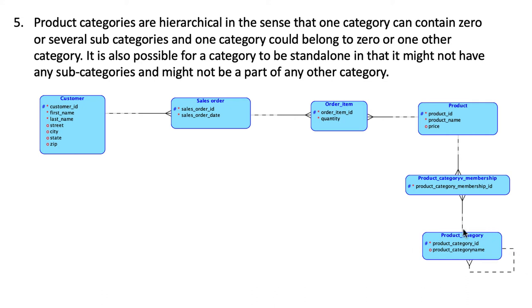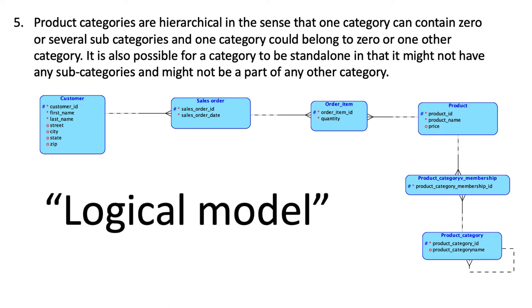And so what we do in order to model that is to clearly understand that this is a unary relationship, because this only talks about relationships among product categories. It's not binary. Two entity types are not involved in this relationship and we model it this way. So this takes care of all the business rules that we have specified, all the business information that we have specified in our original description. And at this point, we can say that our logical model is complete.